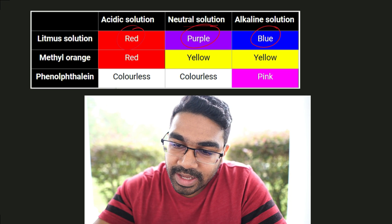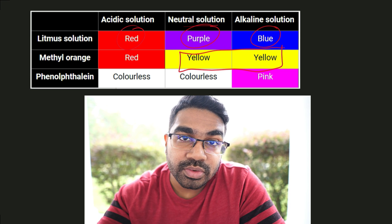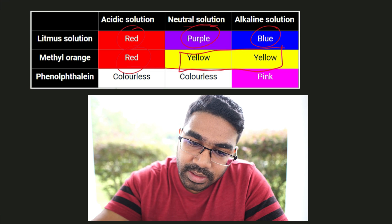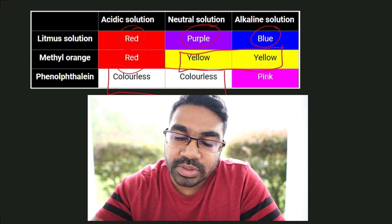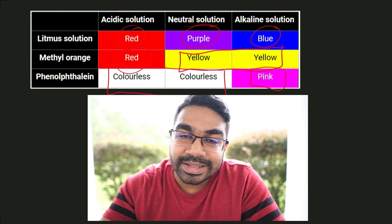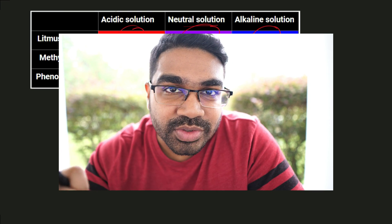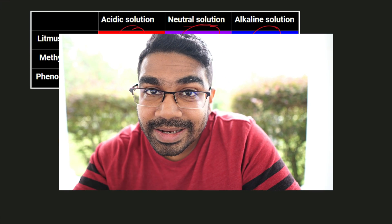Then we have methyl orange solution. Methyl orange is yellow in both neutral and alkaline solution, and therefore it can only be used to detect acidic solutions, where it turns red. For the phenolphthalein indicator, acidic and neutral solutions will be colorless, whereas for alkaline solutions it is pink. Therefore, phenolphthalein cannot be used to detect acidic solutions — it can only be used to detect alkaline solutions.